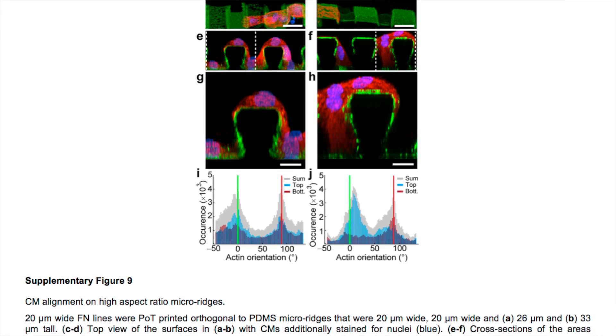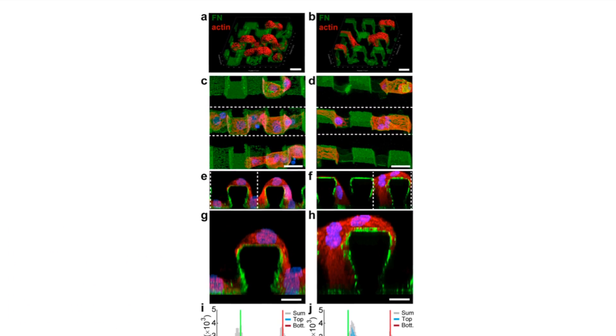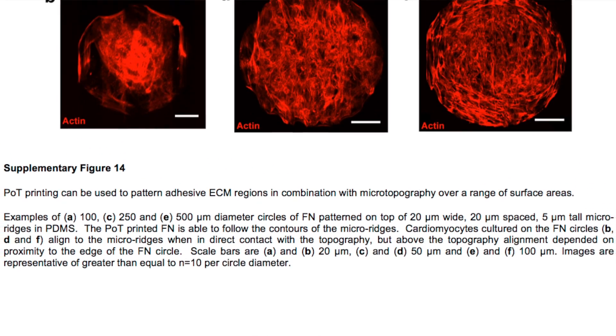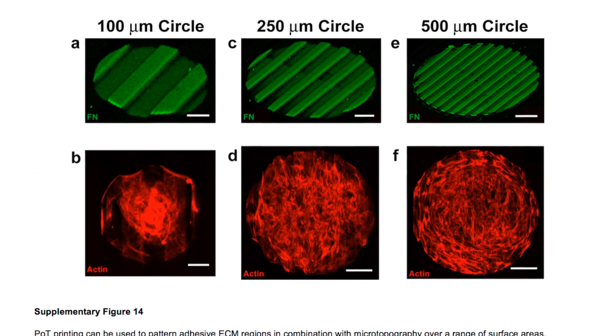Traditionally, there's been two different ways of controlling the way cells interact with the surface. You can either have what they call microtopography, or very small features like squares, ridges, or bumps on the surface that cells will see. They're kind of the same size as cells, and cells will move around and interact with those features.